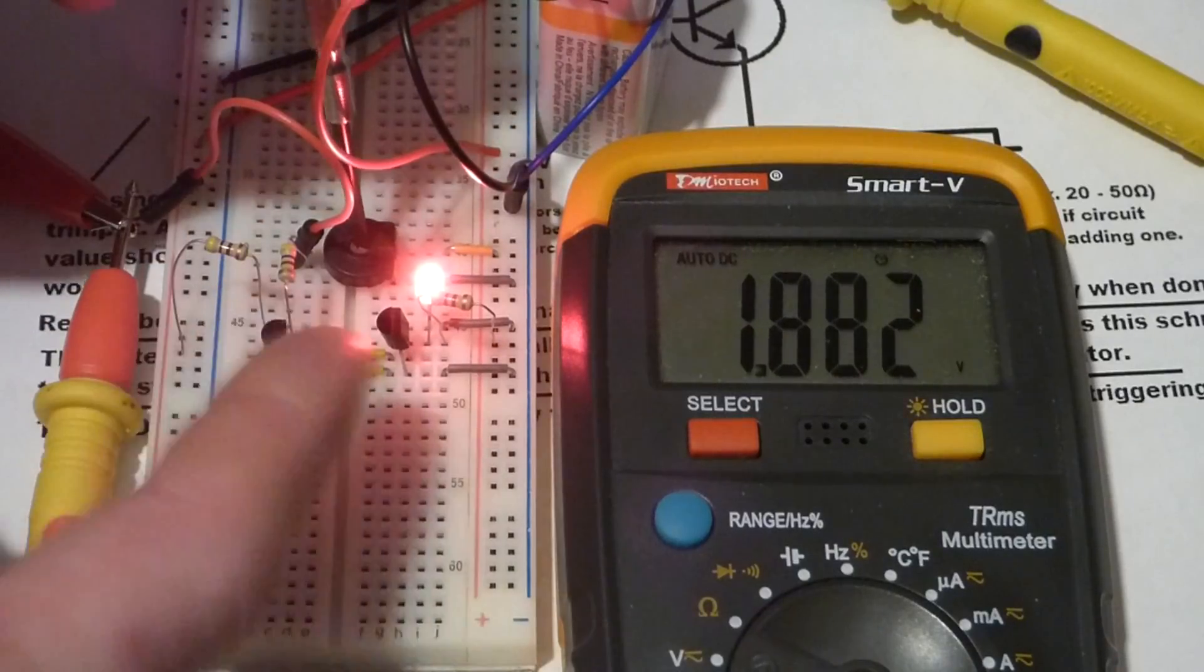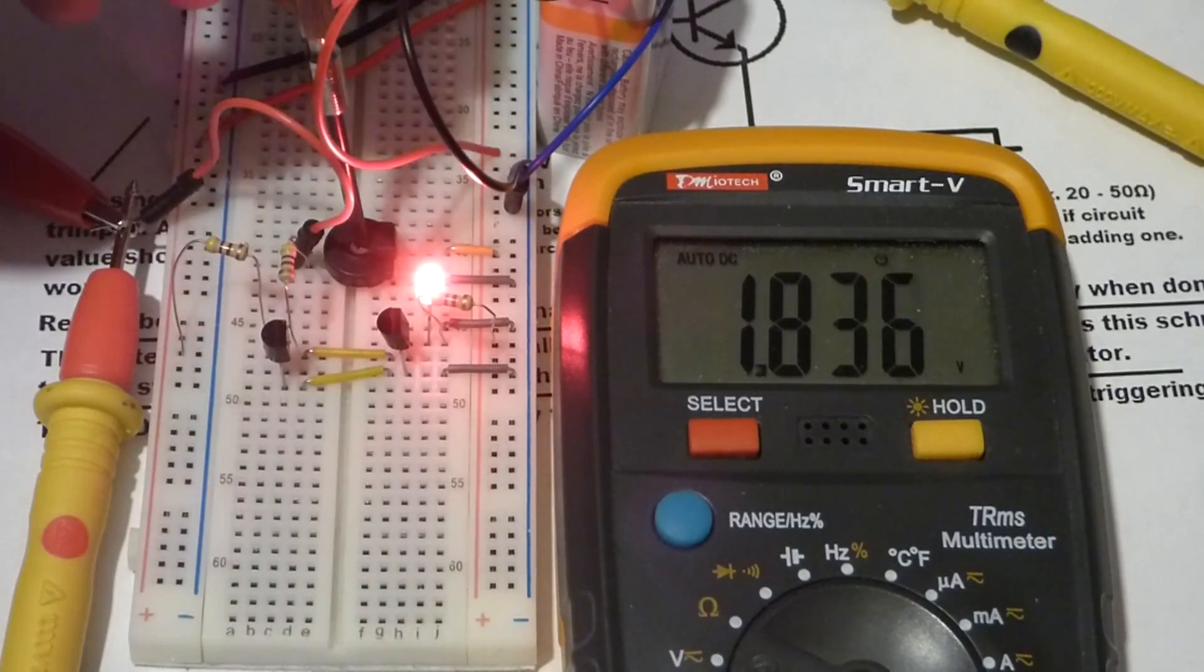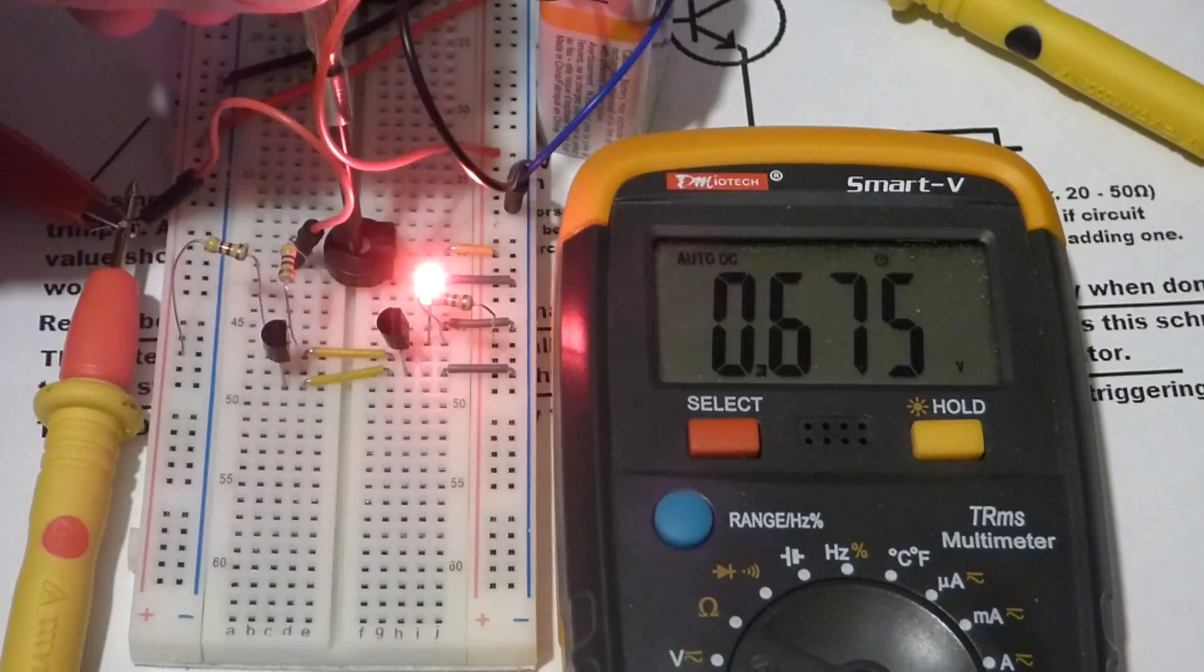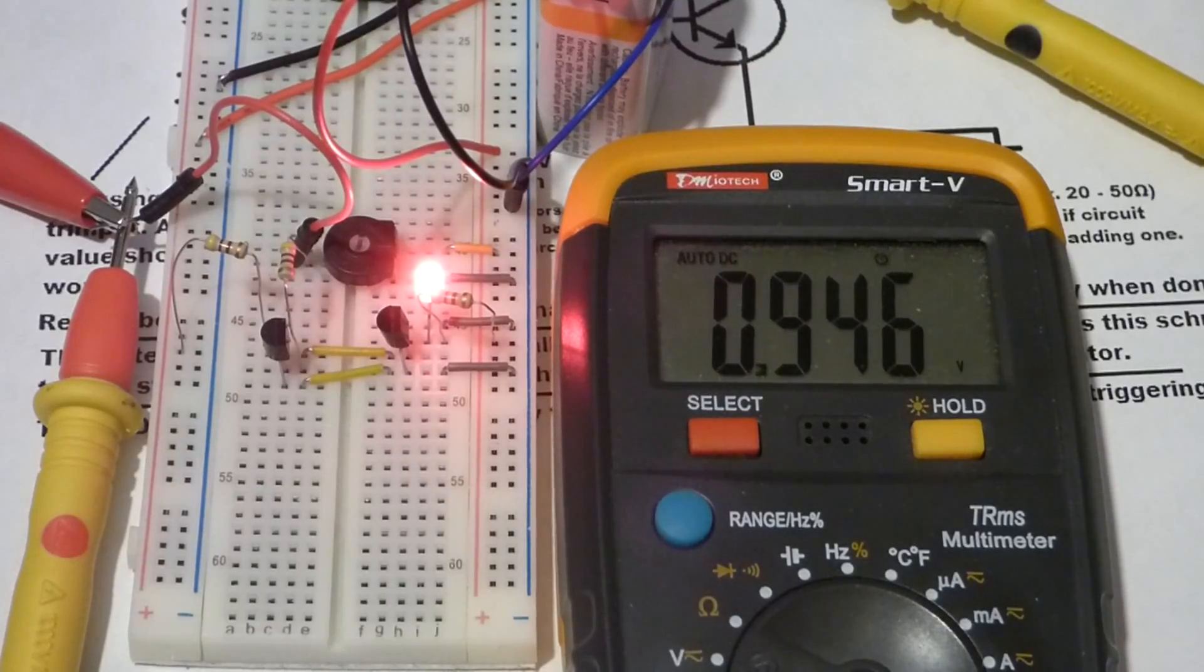In any case, that's the Schmitt trigger for you. That's the nice thing about this. We can take a varying voltage here. And just at a certain point, it either turns the output on or off. And there's a little safety zone in there, hysteresis, to prevent false triggering and sputtering and stuff.